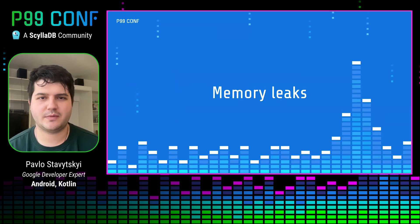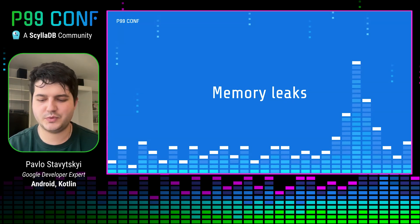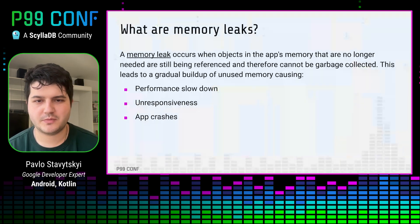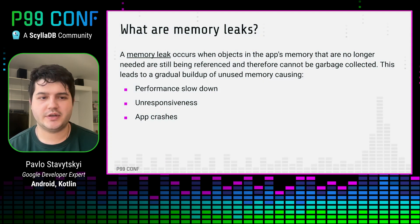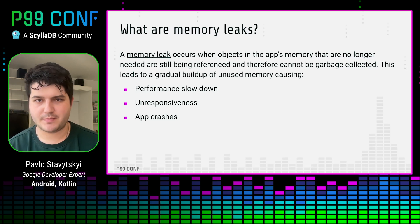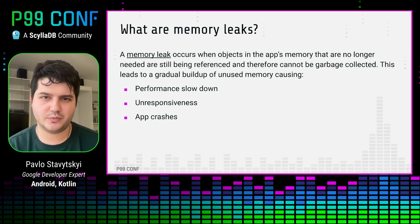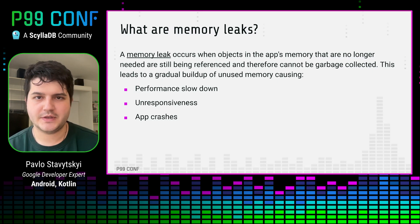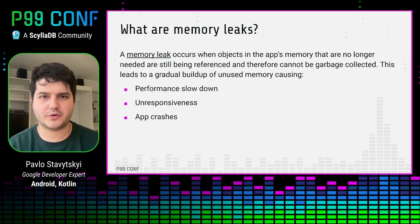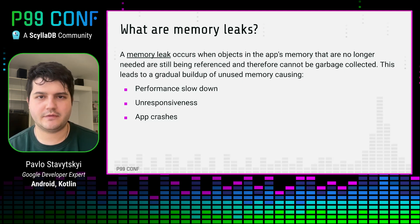Since we're talking about memory metrics, I think it would be a good idea to refresh the definition of what memory leaks are. A memory leak usually occurs when objects in the application memory that are no longer needed are still being referenced by other components of the app, like classes or something like that, so they cannot be garbage collected. This leads to a gradual buildup of unused memory, and the key word here is gradual, which means that there is no strict feedback loop. When a memory leak happens, you won't see an instant visual representation — it builds up over time.